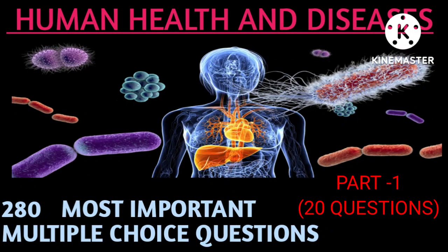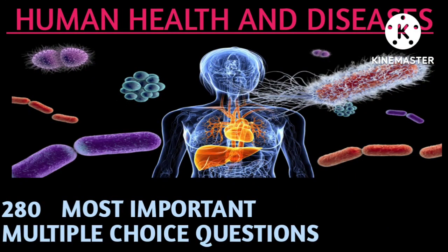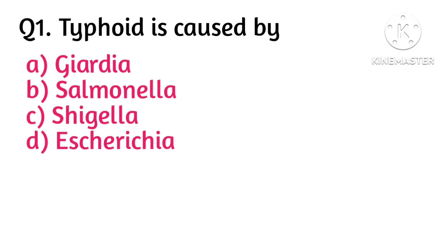Hello everyone. Today we will discuss the most important multiple choice questions related to human health and diseases. First question: typhoid is caused by — option B is correct. Typhoid fever is caused by a type of bacteria called Salmonella typhi.